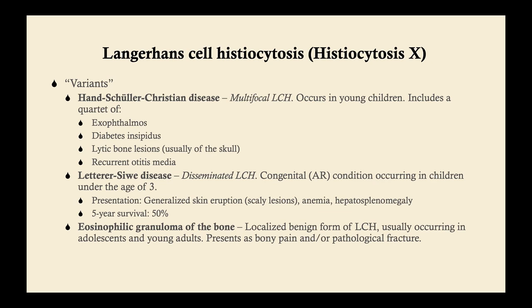Letterer-Siwe disease is disseminated Langerhans cell histiocytosis. It's congenital, autosomal recessive, and typically occurs in infancy up to age three. It presents as a generalized skin eruption with very scaly lesions, anemia, and hepatosplenomegaly. The five-year survival for Letterer-Siwe disease is 50%. A more localized form is eosinophilic granuloma of the bone — just in a bone, presenting as bony pain or pathological fracture. Pathological fractures in young people are not common and should prompt imaging.